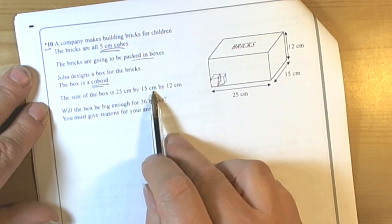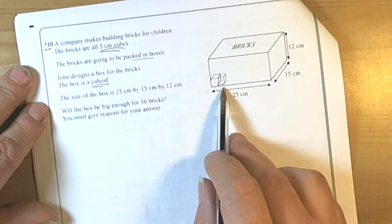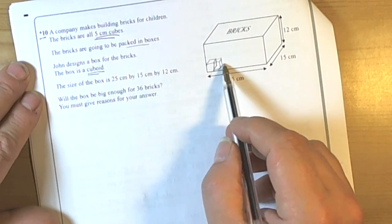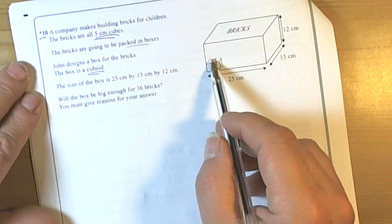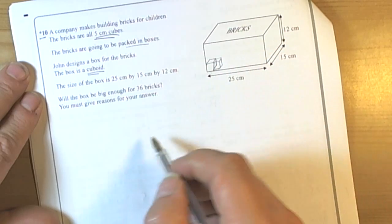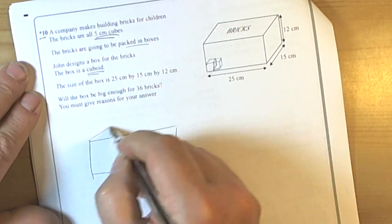The size of the box is 25cm by 15 by 12. Will the box be big enough for 36 bricks? They're really asking us to think about how many bricks can we fit along the bottom, and then how many up the side. So if we imagine what's going on here...